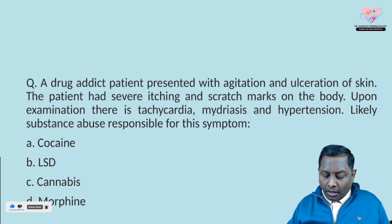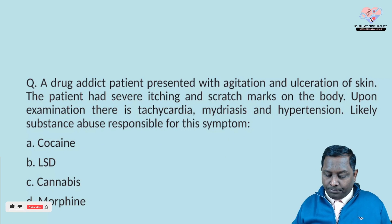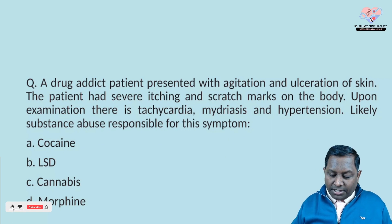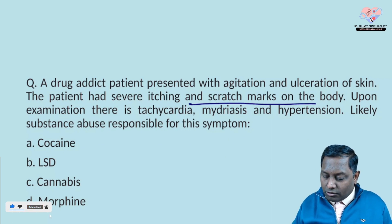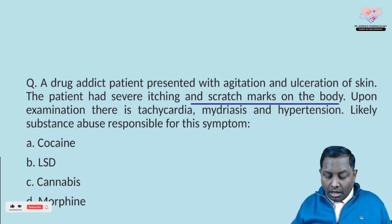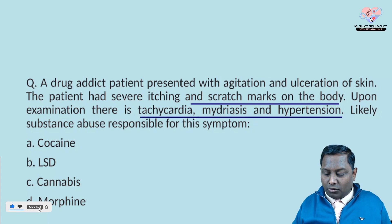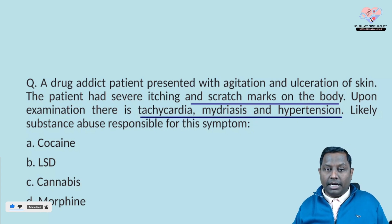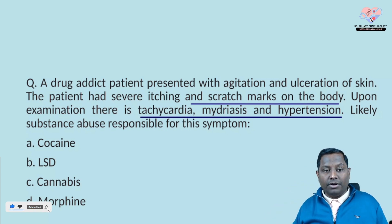The second question is about a drug addict patient who presented with agitation and ulceration of the skin. The patient had severe itching and scratch marks on the body. Upon examination, there is tachycardia, mydriasis, and hypertension — sympathetic symptoms. The likely substance of abuse is: cocaine, LSD, cannabis, or morphine?